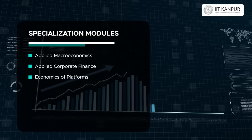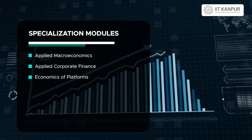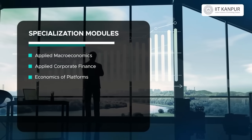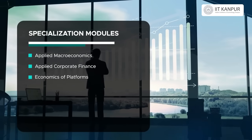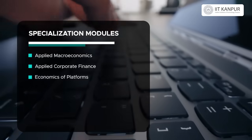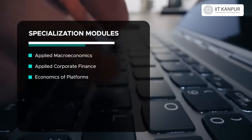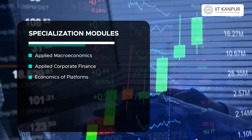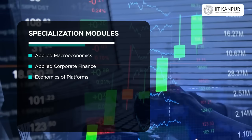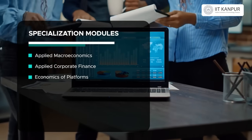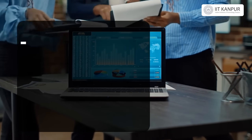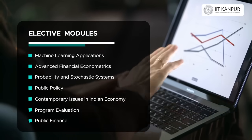After the core modules, you are required to take a set of three courses for the specialization. These include courses such as economics of platforms — dealing with how firms like Amazon are set up, how they make money, the issues they face, and how to regulate them — as well as finance-based courses on applying corporate finance lessons to successfully run your business.